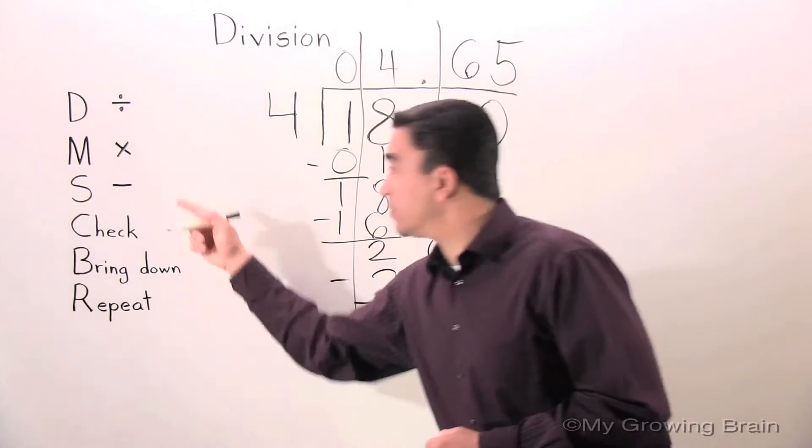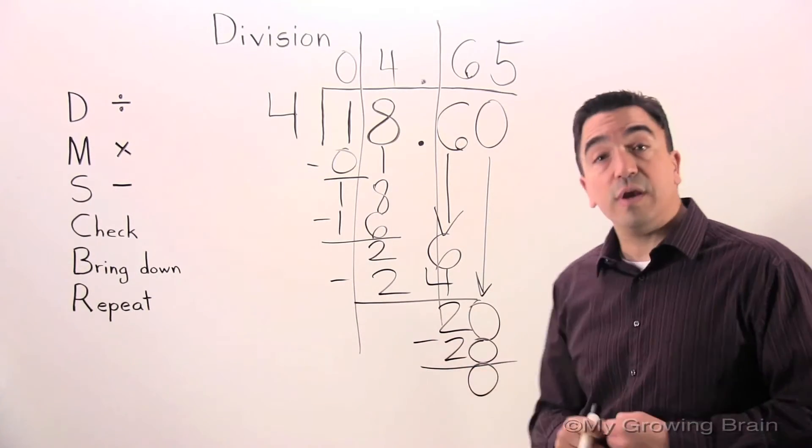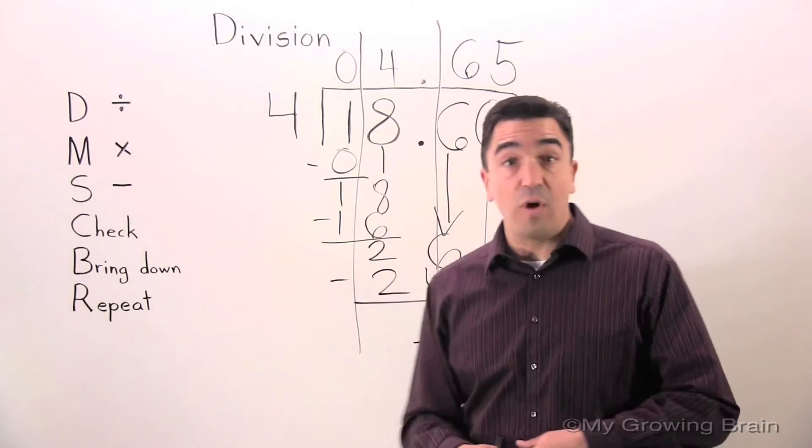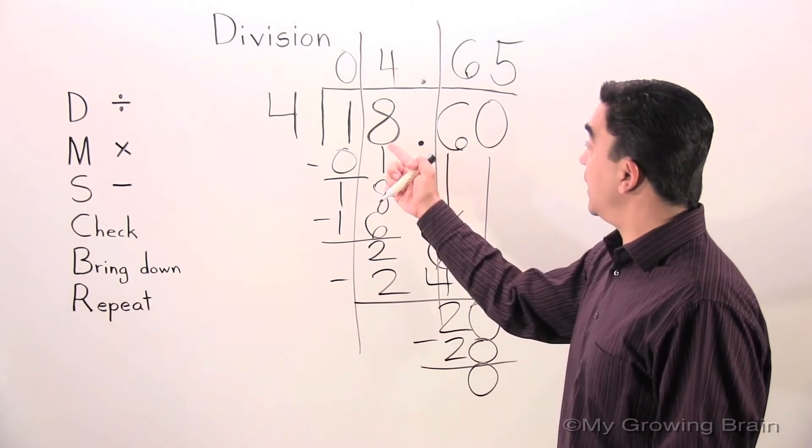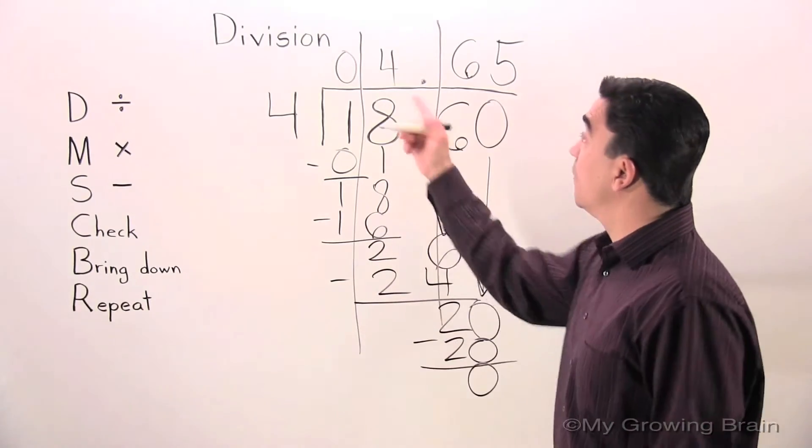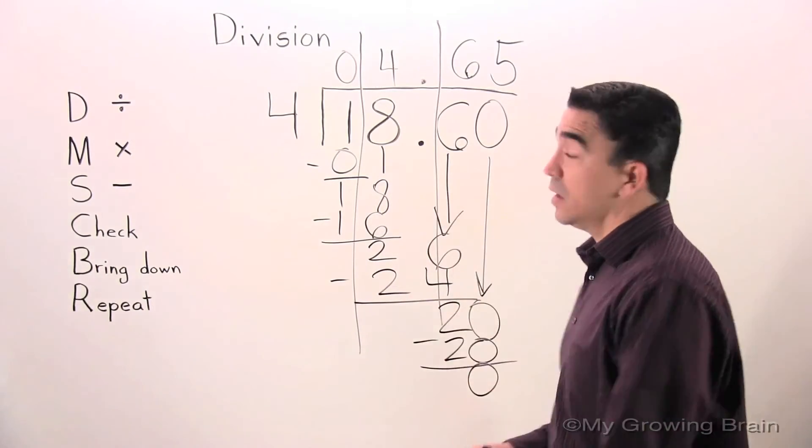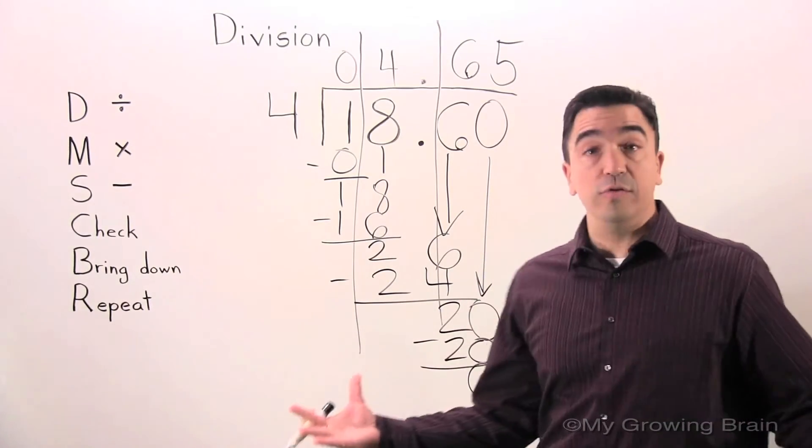Next step: subtract. 20 minus 20 is 0. Check. 0 less than 4. No remainder. Therefore, 18.6 divided by 4 gives us a quotient of 4.65 or 4 and 65 hundredths. That concludes our lesson.